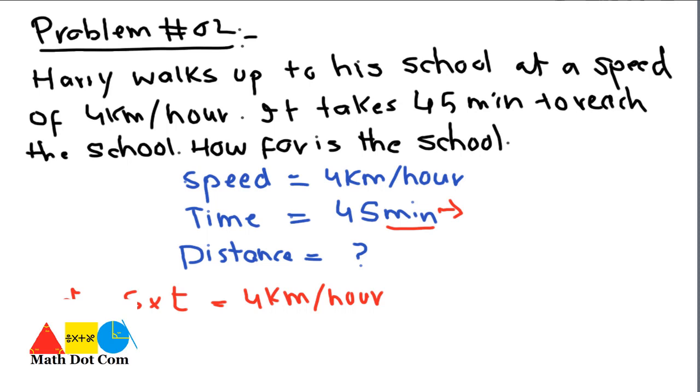How can we convert minutes to hours? We can write it as 45 × 1 minute, and 1 minute = 1/60 hours. So 45 × 1/60, which equals 3/4 hour.